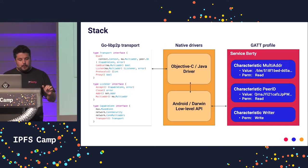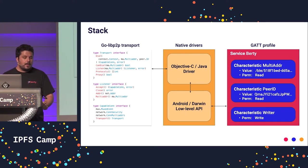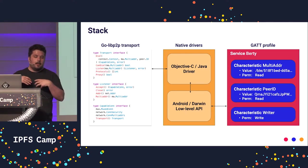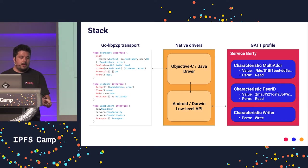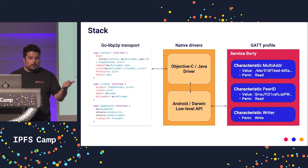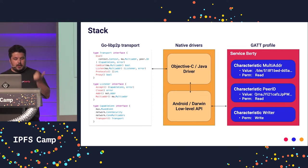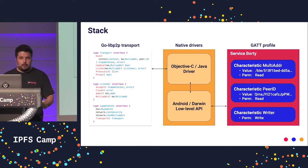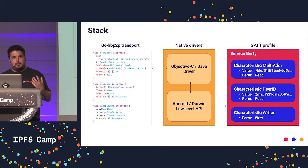The driver talks with the low-level API of Android and Darwin, and this part will finally advertise Berty's service with three characteristics. The two first ones are read-only — one for the multi-address and the other one for the peer ID. The third one is write-only and it's a writer; it will act as a unilateral socket, kind of.